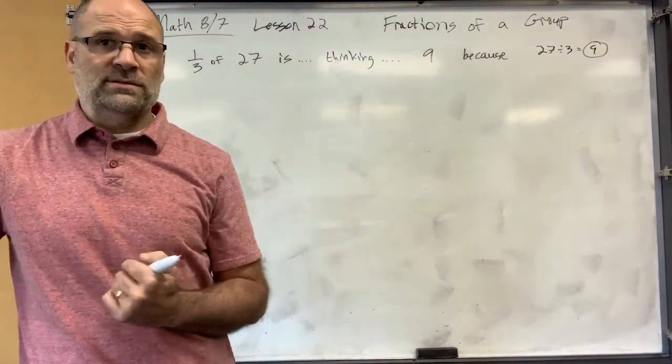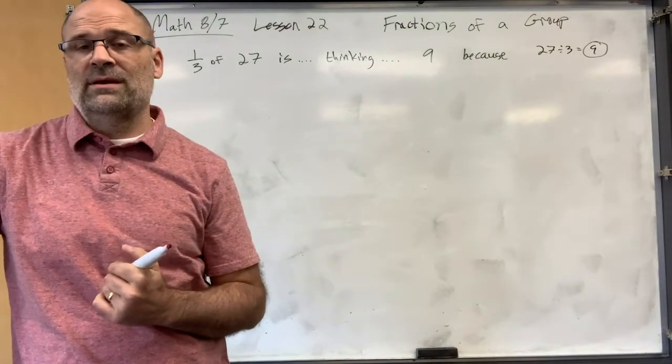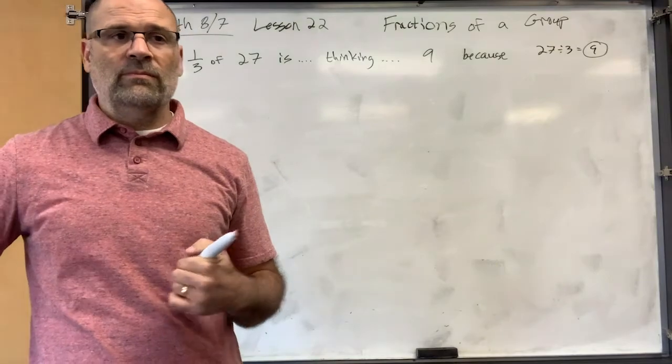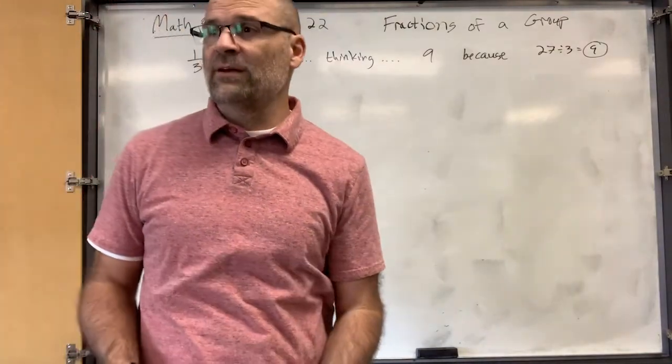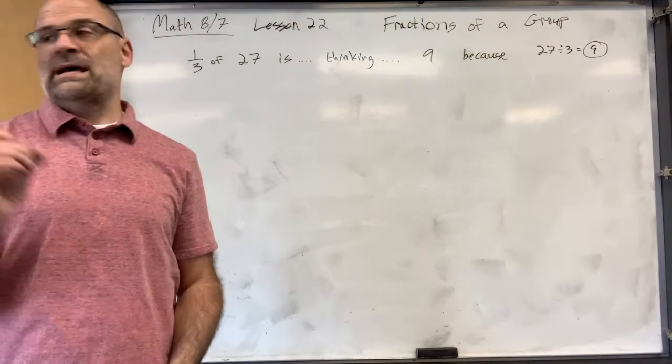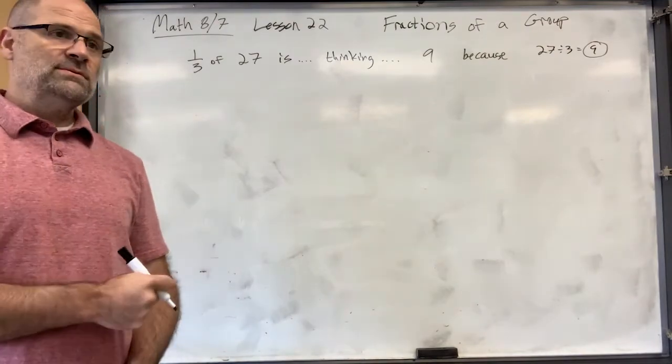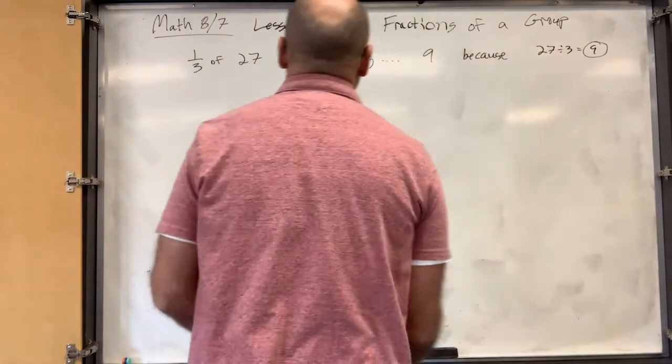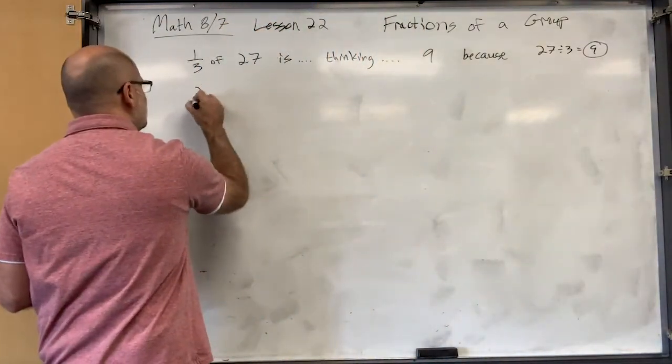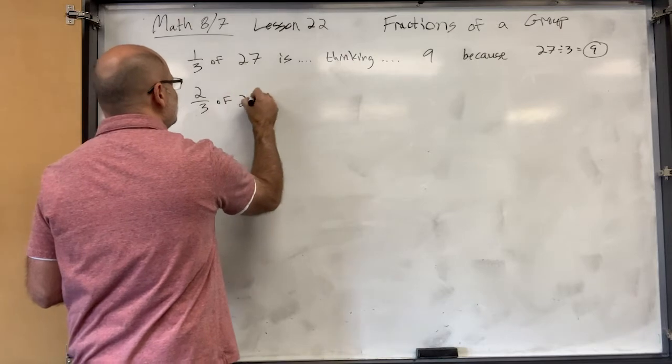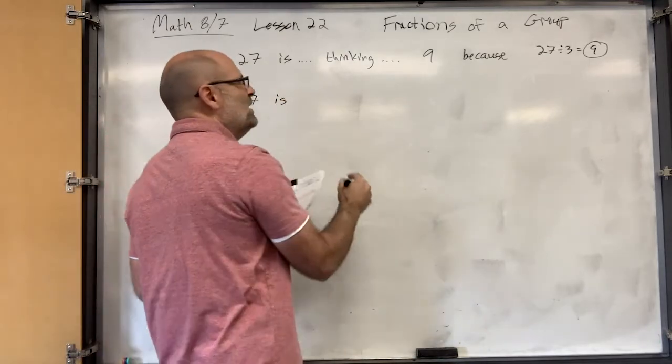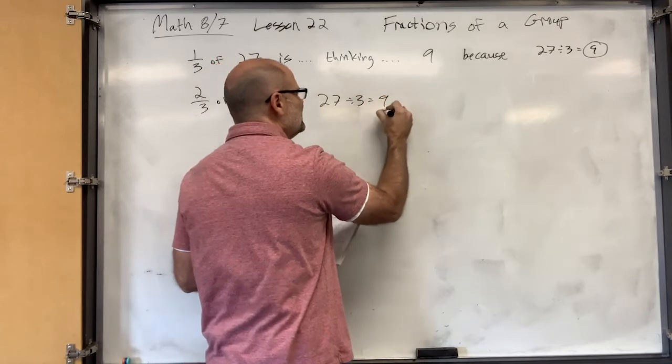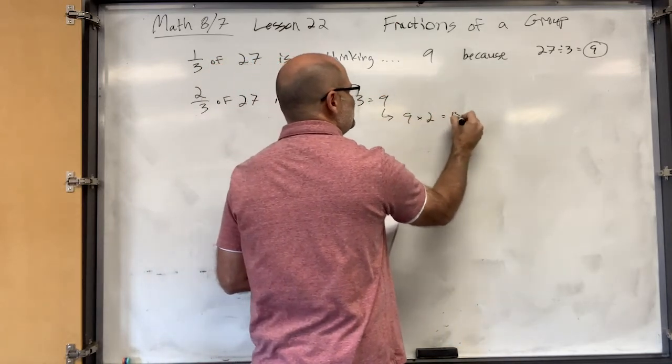So if a third of 27 is nine, what's two-thirds of 27? Whoa, you got that quick. What'd you do? You just multiply it by two. You multiply it by two. You added another nine. So if one apple is nine pounds, two apples is 18 pounds, right? That's a big apple. Okay, so two-thirds of 27 is, well, 27 divided by three is nine, and then nine times two is 18.